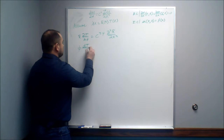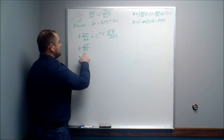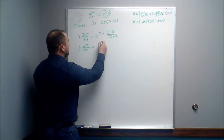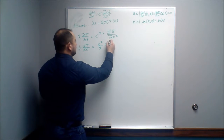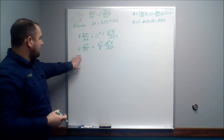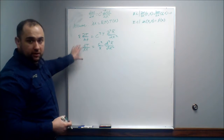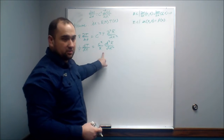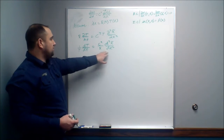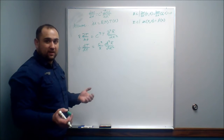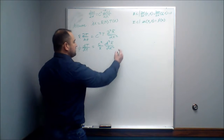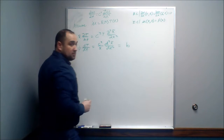I'm going to change this to an ordinary derivative now. Over here we have only a function of time, and over here only a function of position. This function of time, as t varies, is always equal to this function of position, even when x varies. The only way that's possible is if both sides are equal to some constant b.